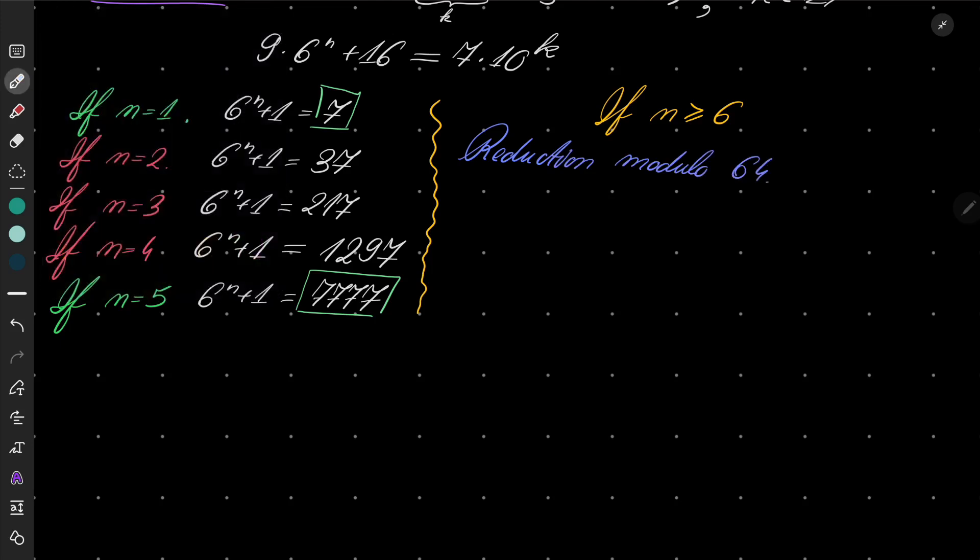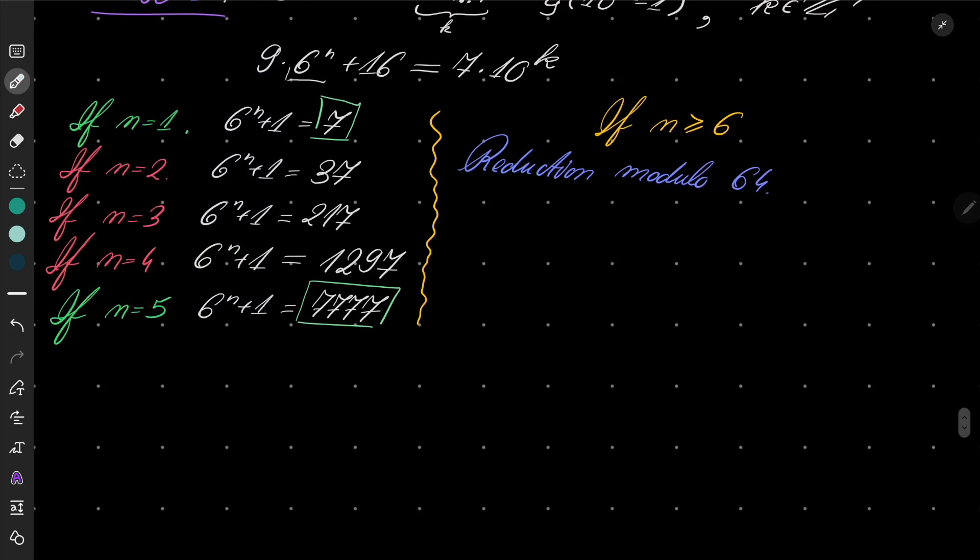Well, if you look closely, 6 to the power of n is 3 to the power of n times 2 to the power of n, and 2 to the power of 6 is 64. So now we know that this part, 9 times 6 to the power of n, is congruent to 0 modulo 64.